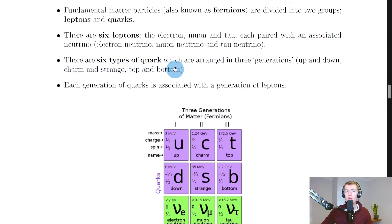And we also have six types of quark, which are said to be arranged in three generations, which are basically just sets. And these are up and down, charm and strange, and top and bottom. So each generation of quarks is associated with a generation of leptons.